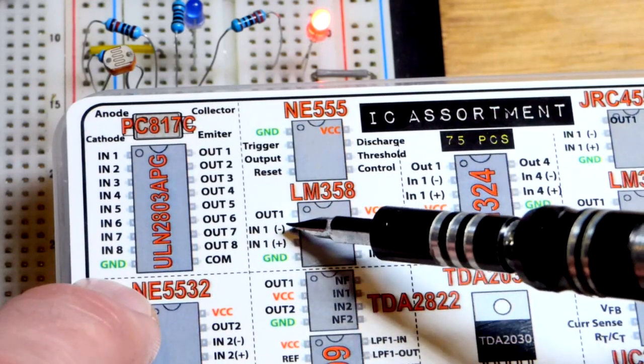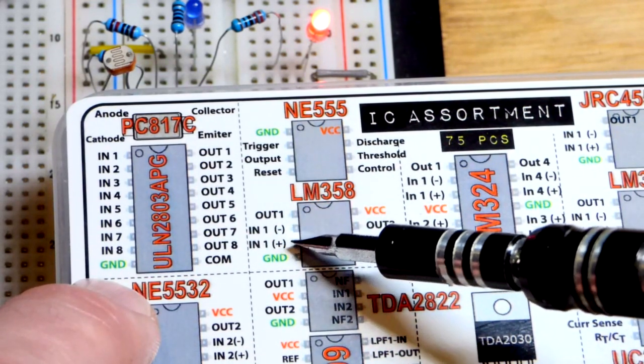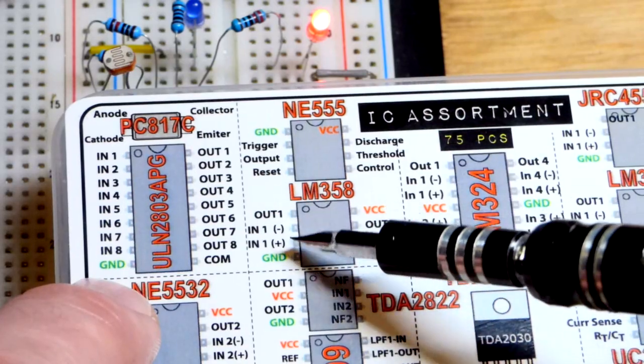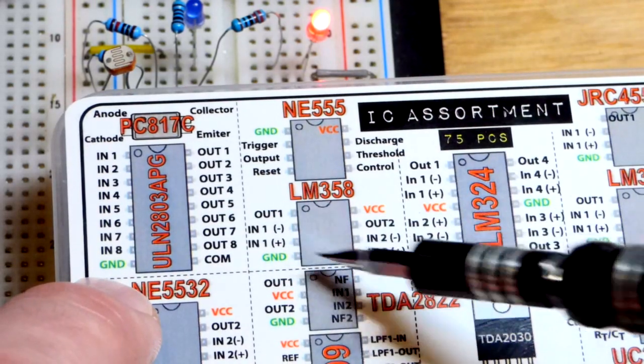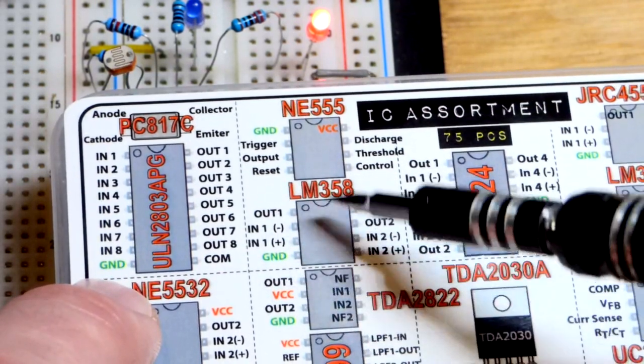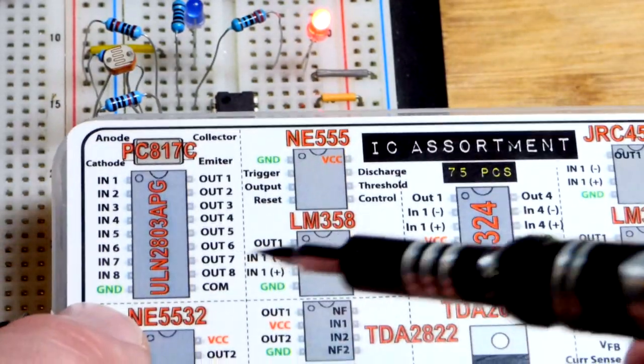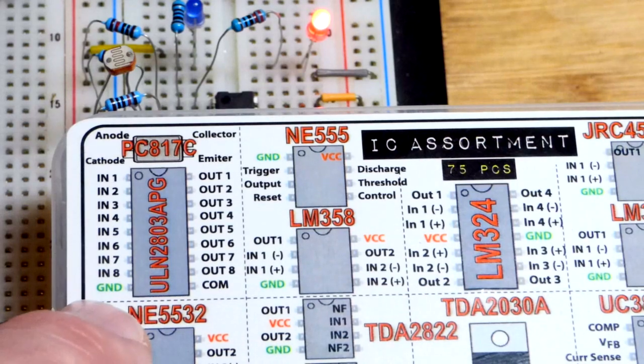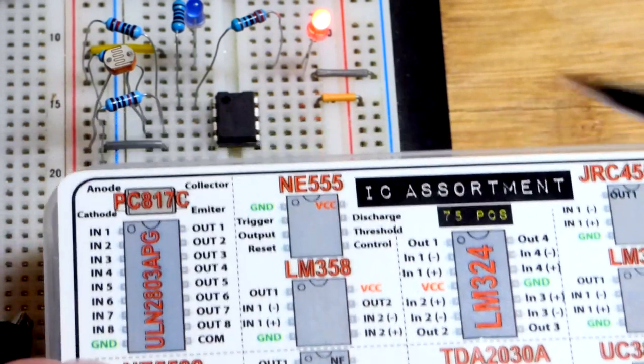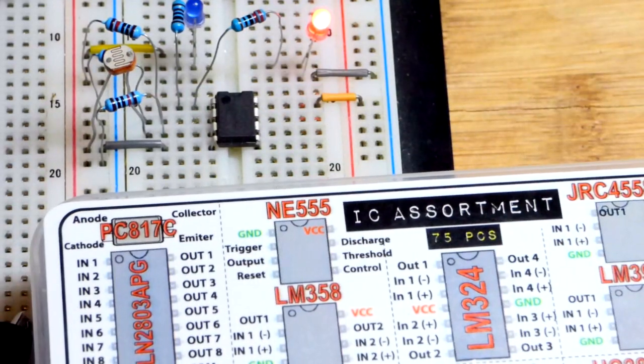On the schematic, I had the inverting input above the non-inverting input. Sometimes the non-inverting is above the inverting. But when it comes to the op-amp itself, they don't move. You've got to make sure you pay close attention in case the schematic has them flipped, that you don't also wire them up as they are flipped.